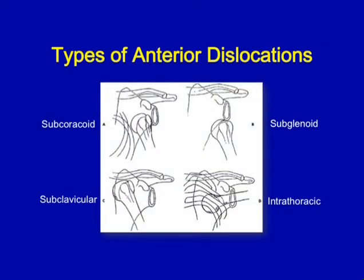Getting into different types of anterior dislocations, the subcoracoid is going to be the most prevalent. However, there are several others that are important to recognize and will subsequently complicate the injury and have an effect on your decision whether or not to reduce or how you're going to manage following the injury. Our focus today is going to be on the subcoracoid type injury.